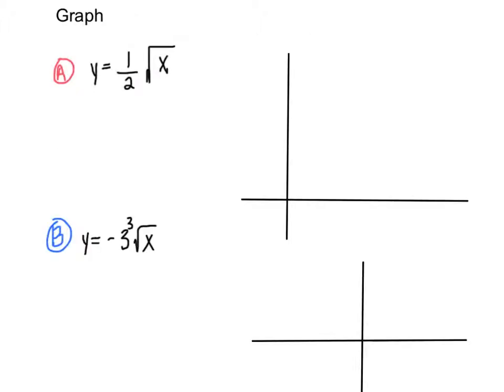So we're told to graph y equals one half times the square root of x. First let's make our xy value table, in which we can plug in a value for x and then plug it into the equation to solve for y.